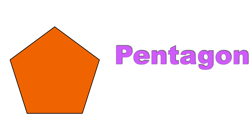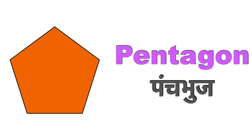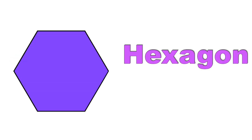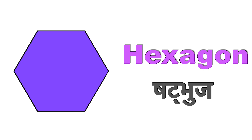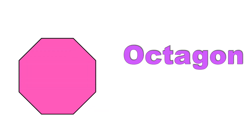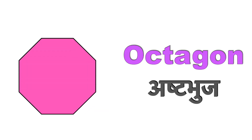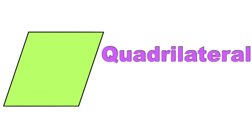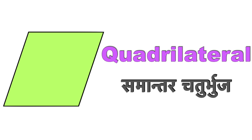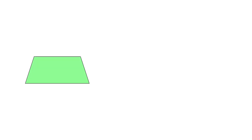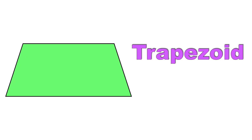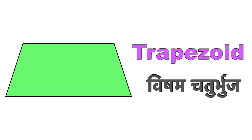Pentagon means Panchabhuj. Hexagon means Shatabhuj. Octagon means Ashtabhuj. Quadrilateral means Samantar Chaturbhuj. Trapezoid means Visham Chaturbhuj.